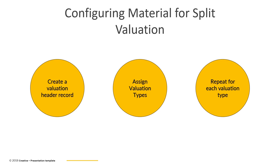The second step is to recreate the same material again in the MM01 transaction, this time assigning valuation types. After creating the valuation header record in step one, we create individual records for each valuation type. When we try to recreate the same material, the system will ask for a valuation type. We enter the valuation type and maintain its characteristics, such as the price for that valuation type. Depending on the number of valuation types needed for a single valuation category, this step needs to be repeated multiple times. For example, if the valuation category differentiates between in-house production and external procurement, we create separate records for each valuation type — such as internal and external. The third step is simply to repeat this process for every valuation type we intend to use.